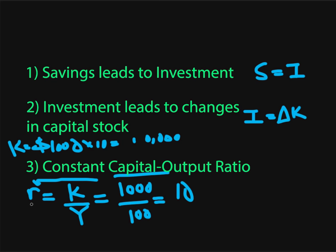A big assumption of this model is that this capital output ratio is fixed. It might make sense in some cases — say each solar panel creates $100 per year in electricity; if you buy five more solar panels, they're still going to make $100 each, so that's a constant capital output ratio. So if R equals K over Y and R is fixed, that means a change in K must lead to the same proportional change in Y. If K went up to 200, Y must go up to 200 to keep R equal to 10 in this example.